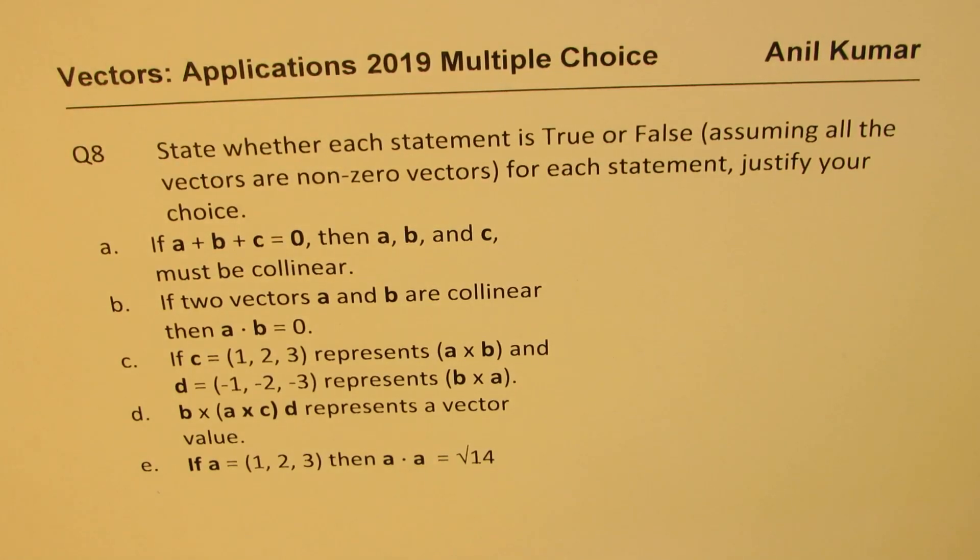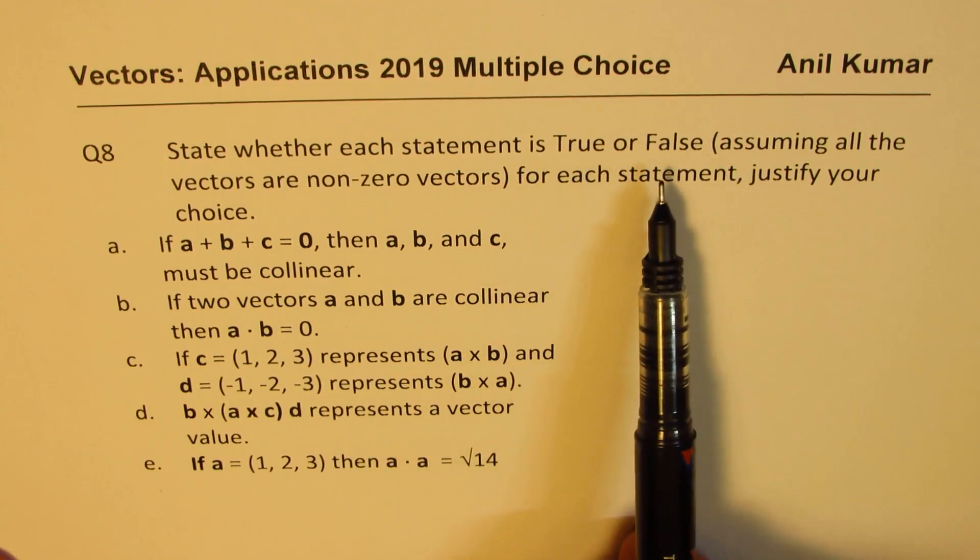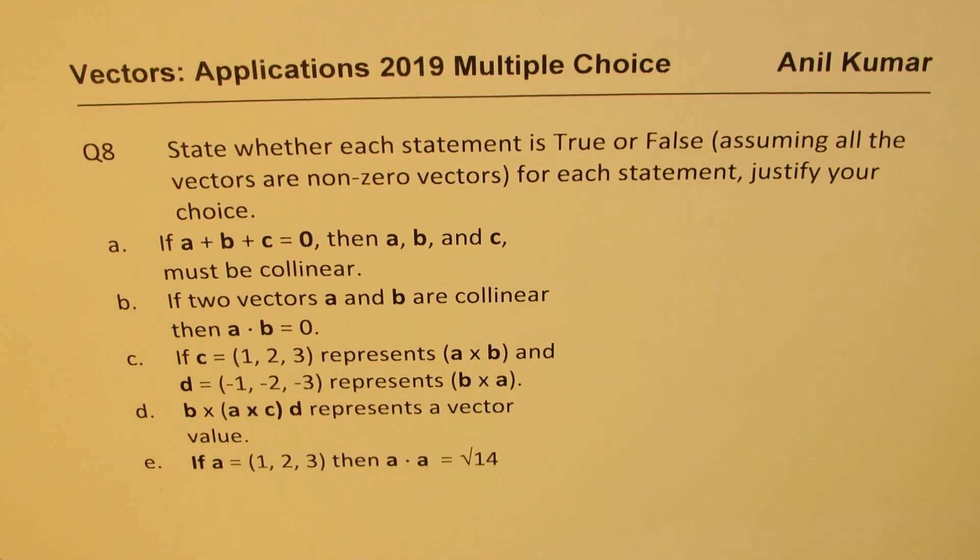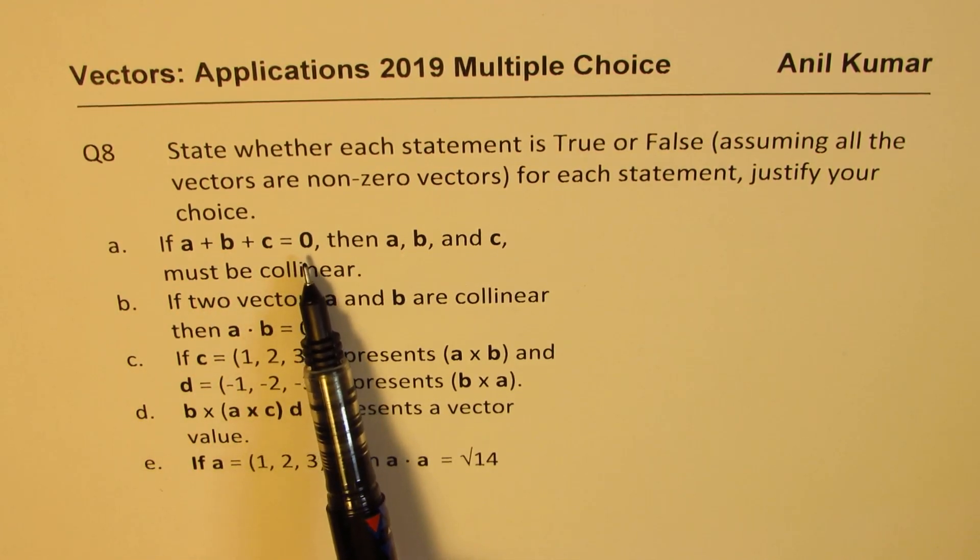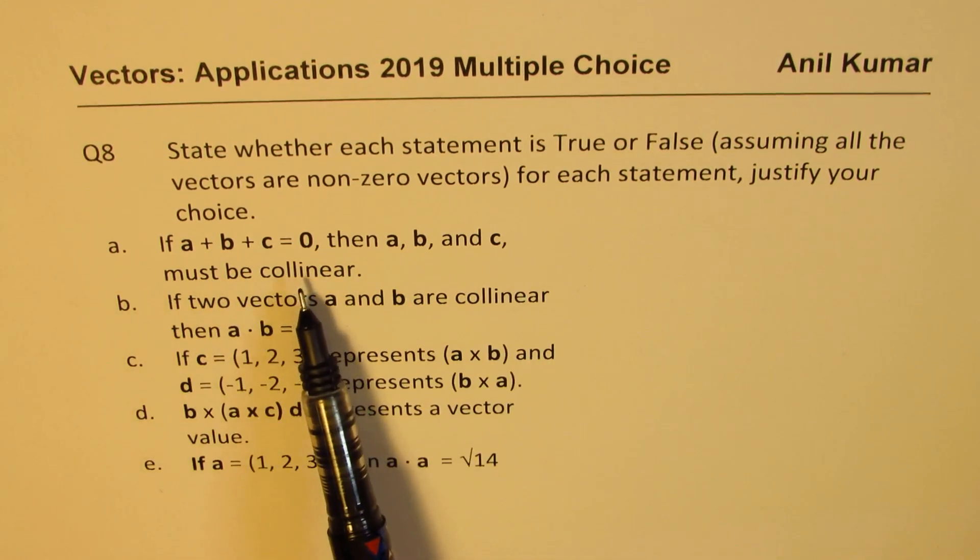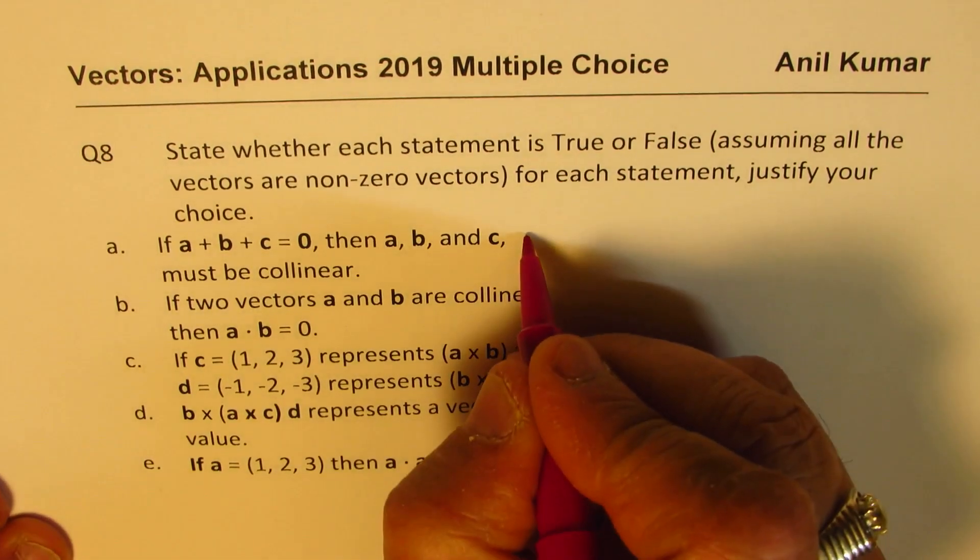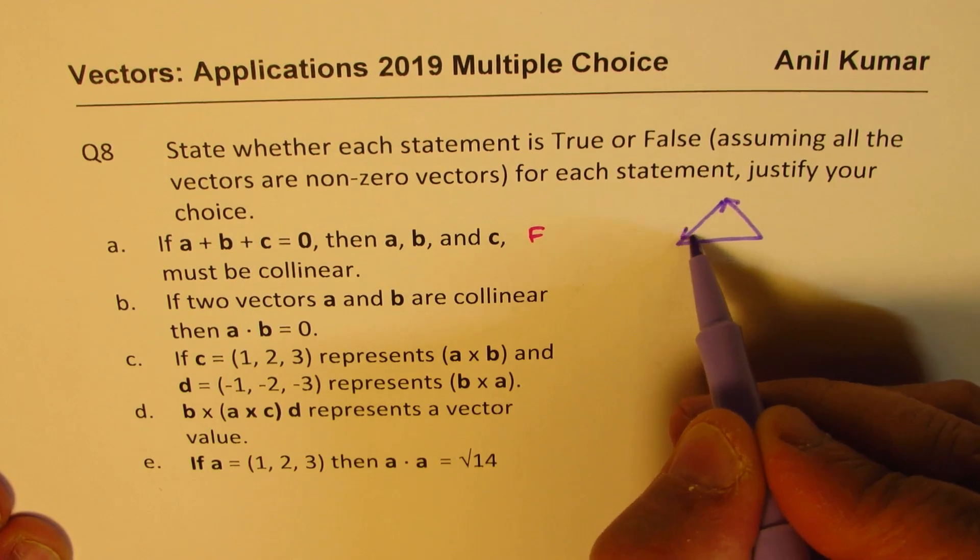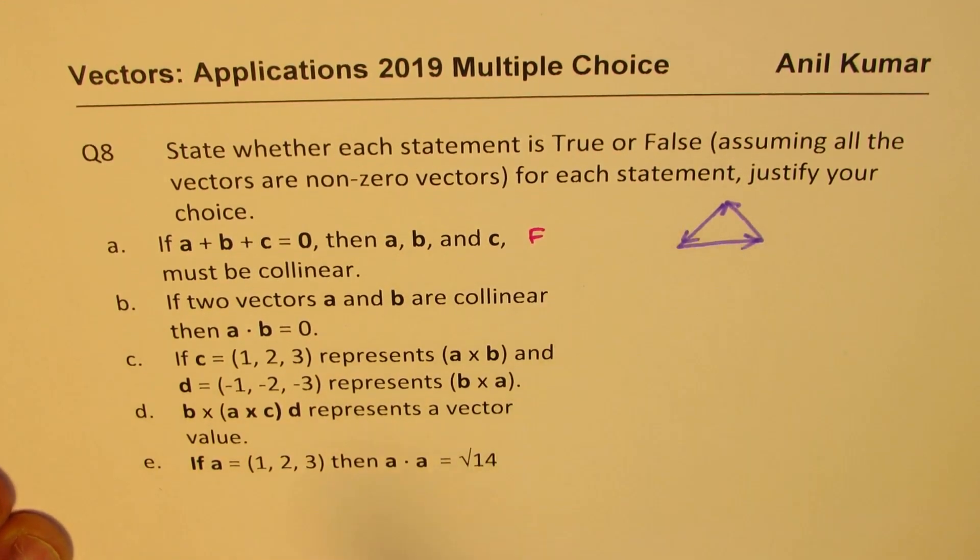Now, question number 8 here actually is a true or false question. You need to justify your answer. State whether each statement is true or false. Assuming all the vectors are non-zero vectors. For each statement, justify your choice. The very first one is, if sum of three vectors is equal to zero vector, then A, B, and C must be collinear. Well, not necessary. So the answer will be definitely false. And the reason could be, if I have this triangle, then we have zero sum and they are not collinear.